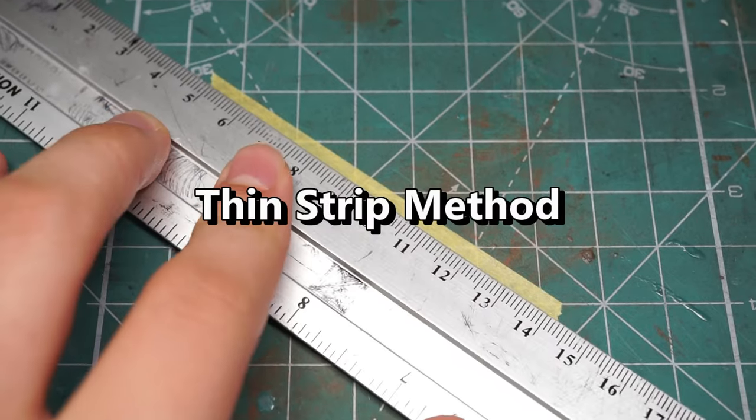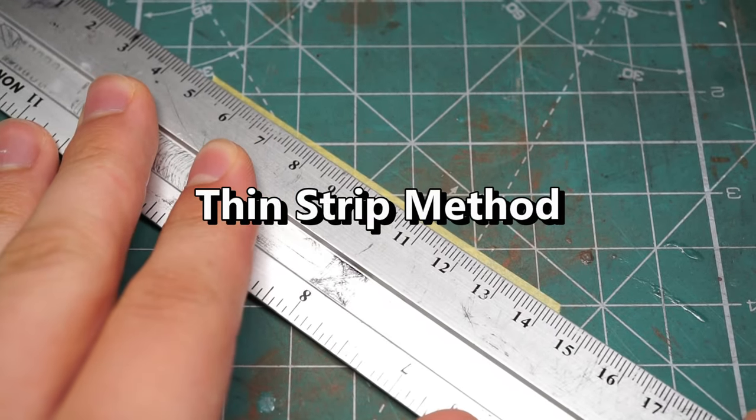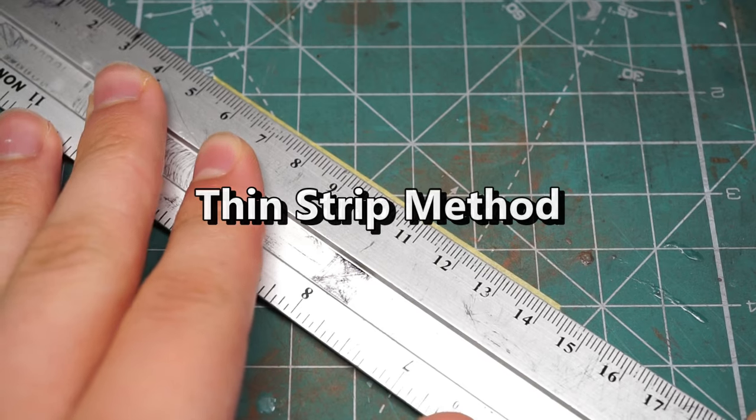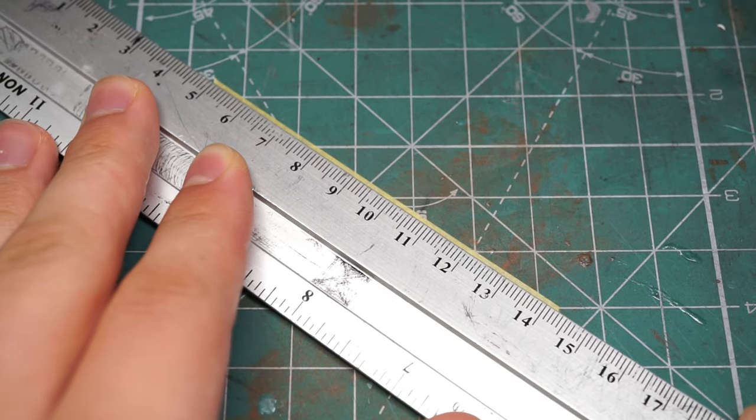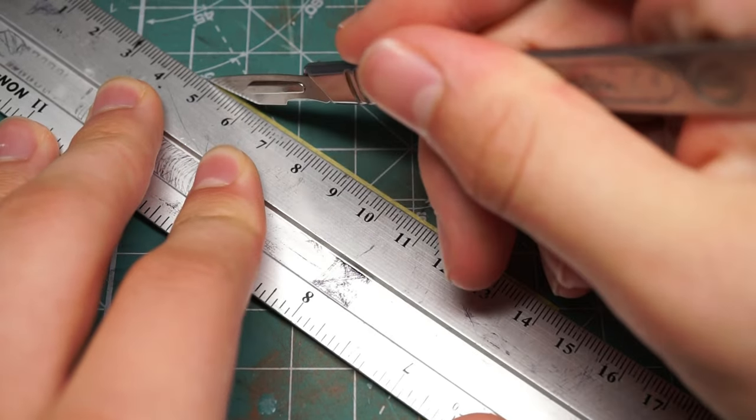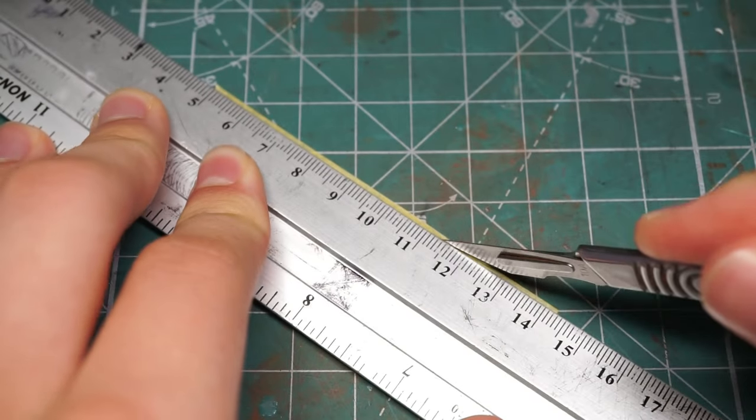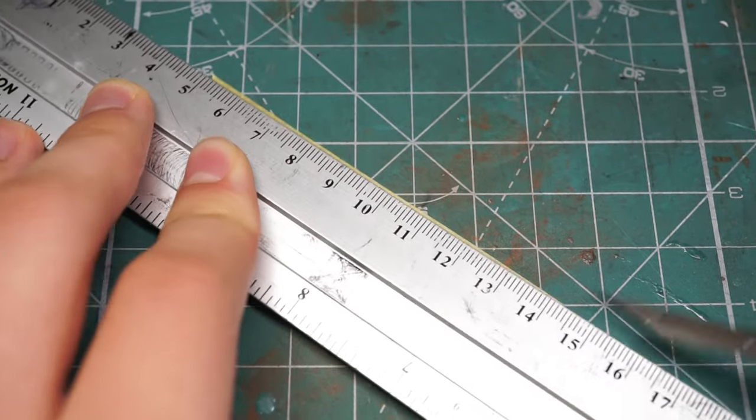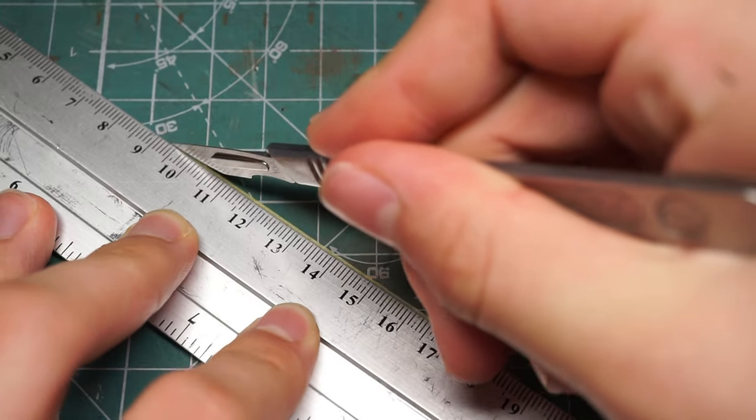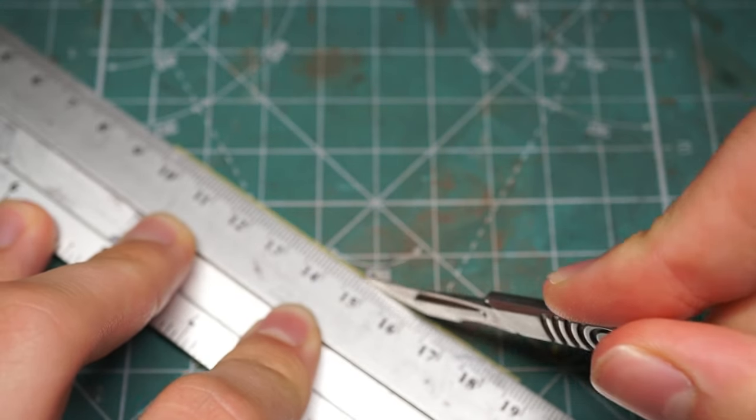The second method I'll be demonstrating is what I call the thin strip method. For this you need to use a ruler to cut very thin, straight strips of masking tape on a cutting mat or another flat surface. For masking straight edges these strips can be a little thicker, though to handle the extremes of curved edges you need to cut them very thin, and I mean very thin.